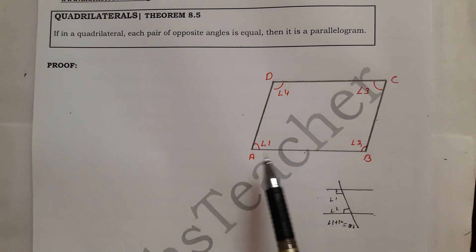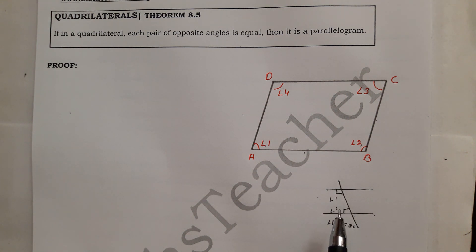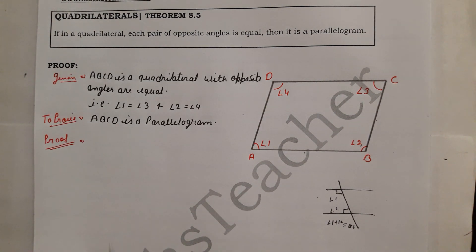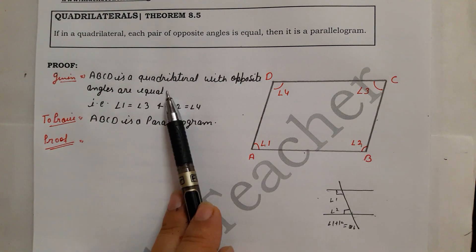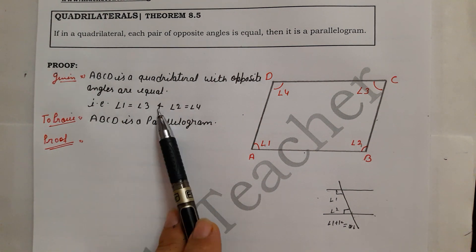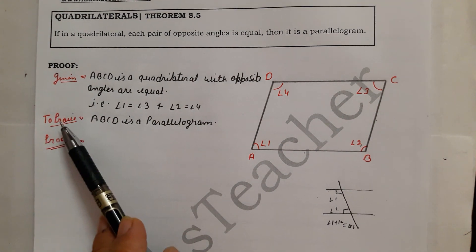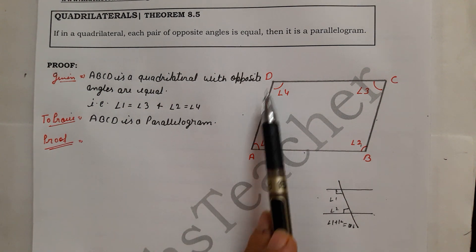We are using the fact that the sum of co-interior angles on the same side of the transversal is 180 degrees to establish the parallel lines. So we write down the Given: ABCD is a quadrilateral with opposite angles equal — Angle 1 equals Angle 3 and Angle 2 equals Angle 4. To Prove: ABCD is a parallelogram.